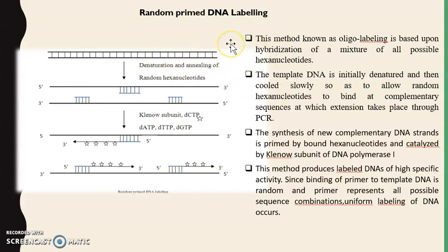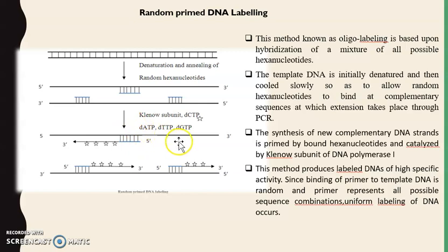Another method for labeling DNA probes is the random priming method. In this method, oligo labeling is based on hybridization of a mixture of all possible hexanucleotides. After denaturation and annealing of these random hexanucleotides, the Klenow fragment of DNA polymerase I uses dATPs, dTTPs, and dCTPs — which are labeled — to extend the primers. This method produces labeled DNAs of high specific activity since binding of primer to template DNA is random and represents all possible sequence combinations, allowing uniform labeling of DNA.